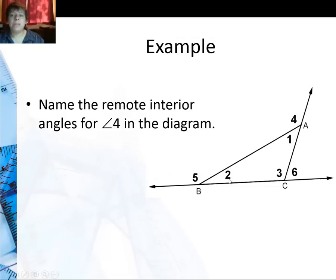Here now I'm going to look at a different angle, angle four. Well I'm not going to have angle one anymore because that's adjacent to angle four. I'm going to use angle two and angle three. So angle two and angle three are the remote interior angles for angle four.